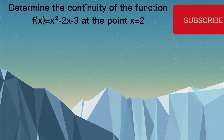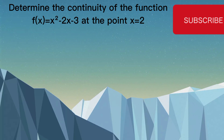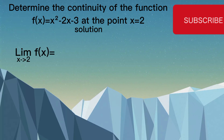The next question says: determine the continuity of the function f(x) = x² − 2x − 3 at the point x = 2. This x = 2 means we substitute 2 for x. All we have to do is plug 2 into the expression: 2² − 2(2) − 3.